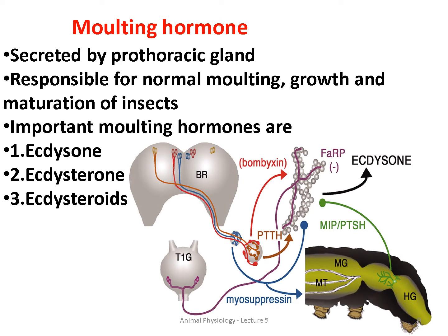The next type is Molting Hormone, which is secreted by the pro-thoracic gland. Its main function is that it is responsible for normal molting, growth, and maturation of insects. Under Molting Hormone, there are three types: Ecdysone, Ecdysteroid, and Ecdysteroids — these are the three molting hormones secreted by the thoracic glands in insects.